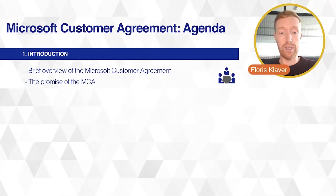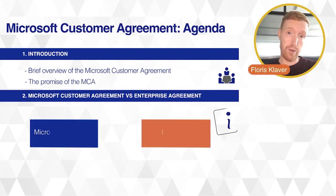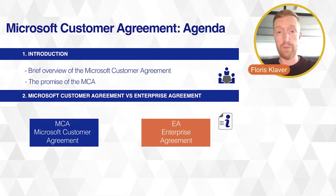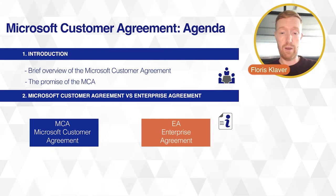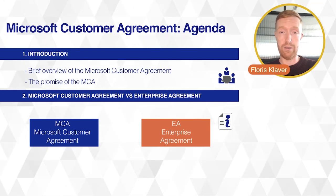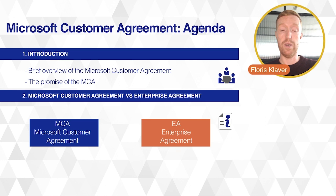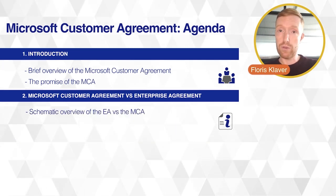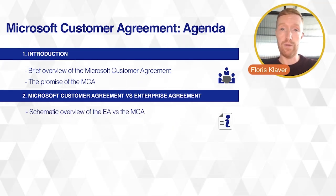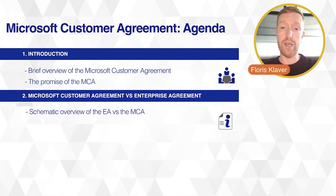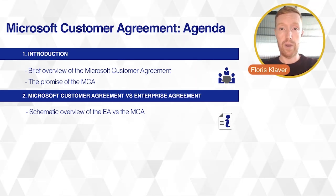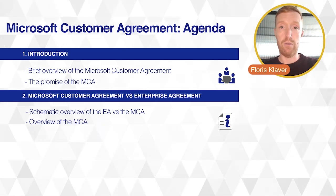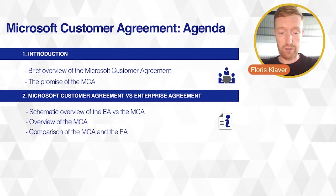Second, we're going to dive into the Microsoft Customer Agreement versus the Enterprise Agreement, because that's what most people's interest is about — how it translates from an Enterprise Agreement to the Microsoft Customer Agreement. We have some schematic overviews showing what the EA currently is versus what the MCA currently is, and then we dive a little bit further into the overview of the MCA and give a final comparison between all the differences.